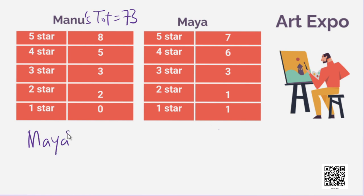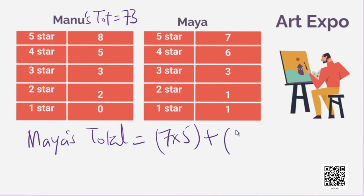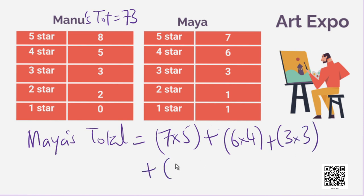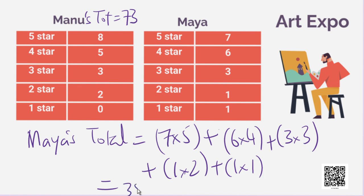Now, let us calculate Maya's total. We have 7 five-star ratings — that is 7 times 5 — plus 6 four-star ratings, then 3 three-star ratings, then 1 two-star and 1 one-star. So, 7 times 5 is 35, then 6 times 4 is 24, 3 threes are 9, plus 2 and then 1. So, Maya's total is 71.